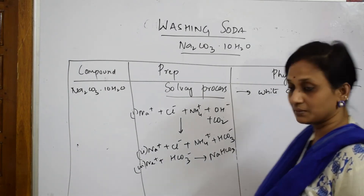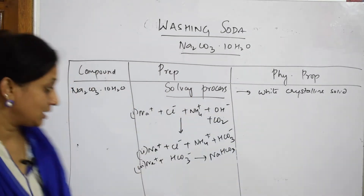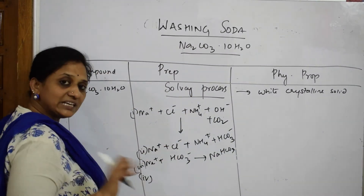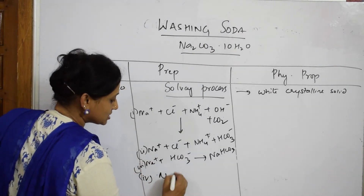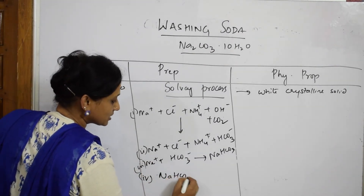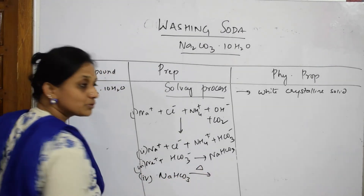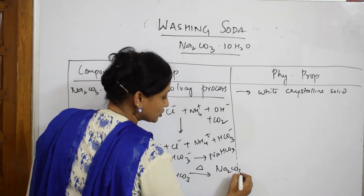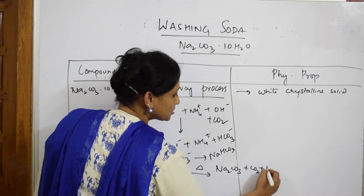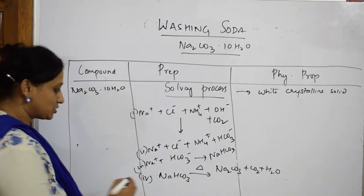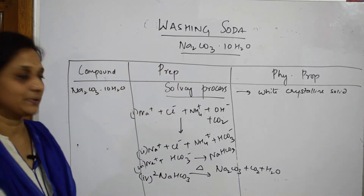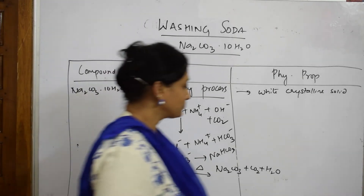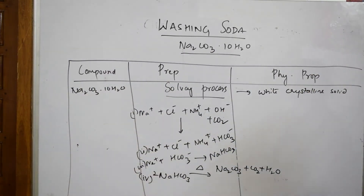NaHCO₃ is sodium bicarbonate, also known as baking soda. When baking soda is heated, it decomposes into sodium carbonate decahydrate (washing soda), carbon dioxide, and water. This completes steps 1 through 4 of the preparation process.